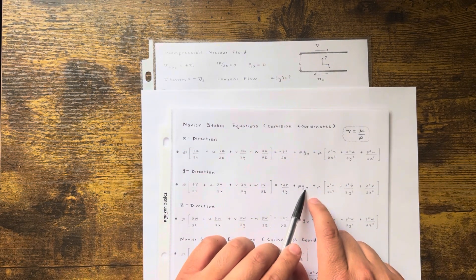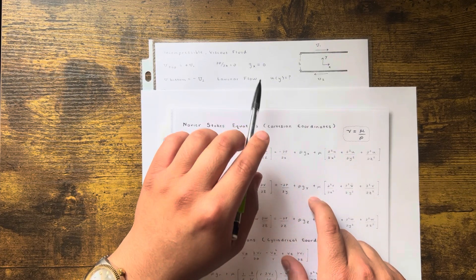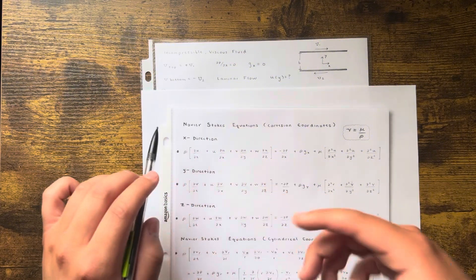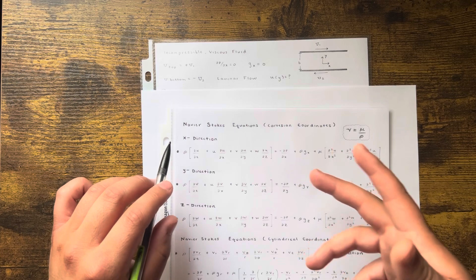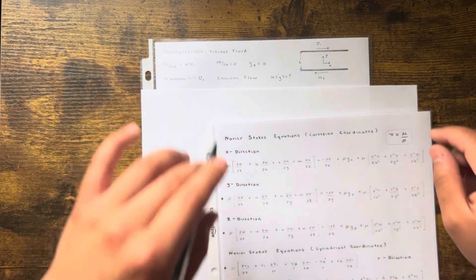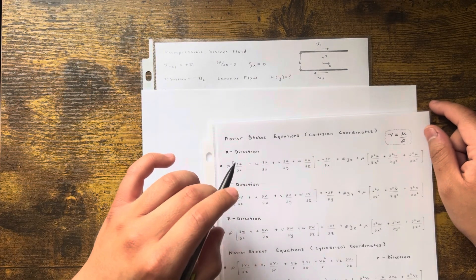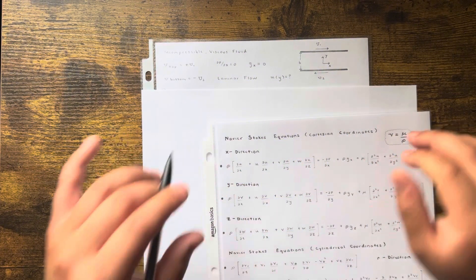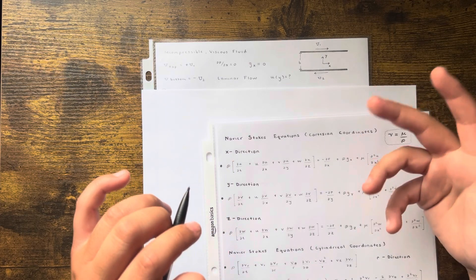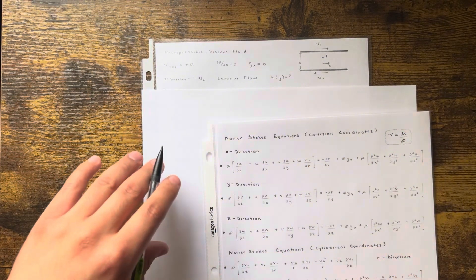Gy is the body force they're talking about. Gx is zero, and that's what's important because we're going to apply the Navier-Stokes equation in the x direction, in the fluid flow direction. It's laminar flow. It's steady state. Whether you're a bachelor's, master's, or PhD student, you'll most likely still be doing steady state only.